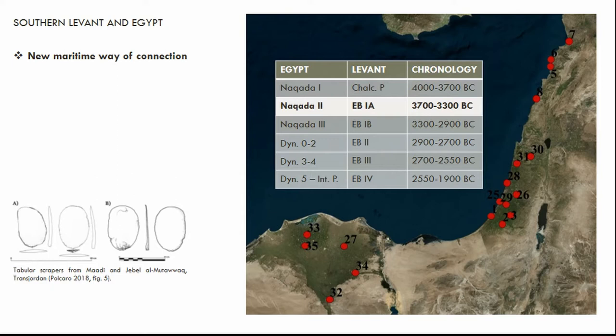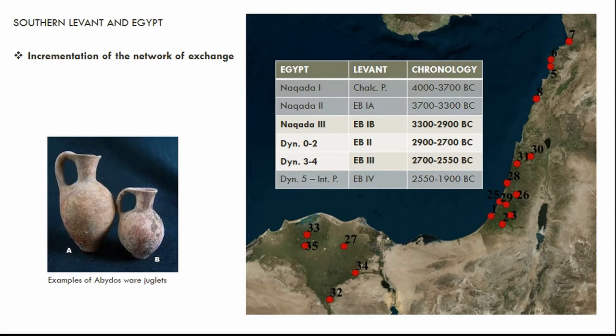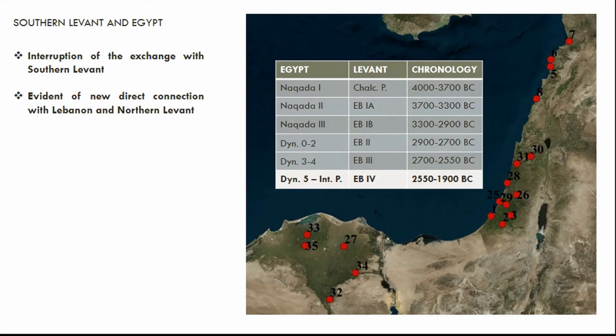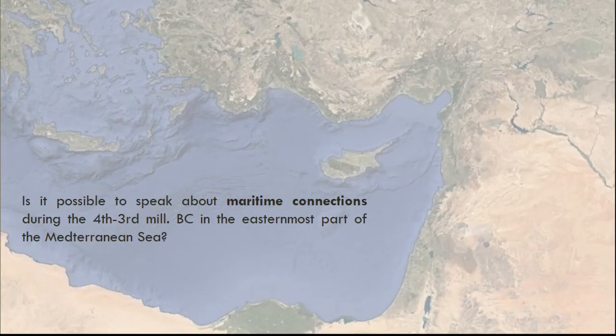For the first time it is possible to speak about maritime connection. The coastal sites along the shorelines are now characterized by the presence of imported elements, among which there are tabular scrapers, pottery vessels related to consumption, and luxury goods. This new trade road along the shore continued developing during EB2 and the beginning of EB3. Only at the beginning of EB4, when urban development in southern Levant underwent an interruption, did the evidence of contact between the two regions also seem to cease.